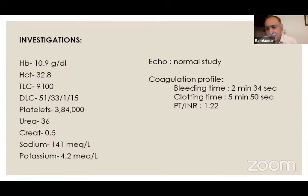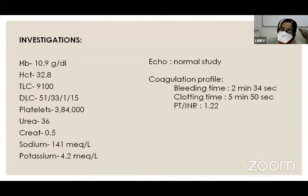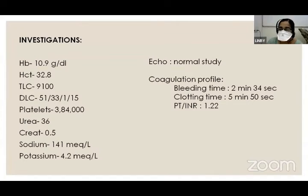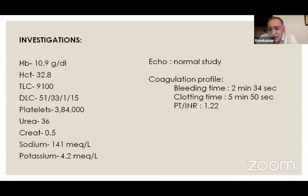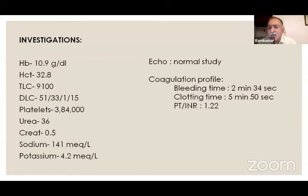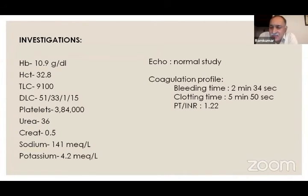Laryngospasm is an important concern — it can occur most commonly at the time of extubation. Precipitating causes include blood, secretions, or clots in the airway (similar to adenotonsillectomy). Laryngospasm is a transient partial or complete closure of the glottis due to irritation, and is distinct from laryngeal edema.